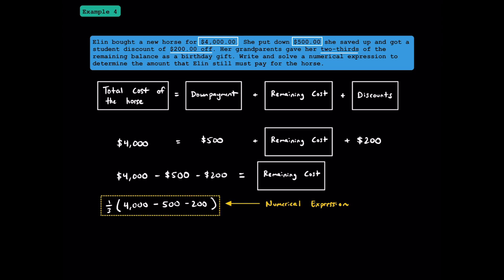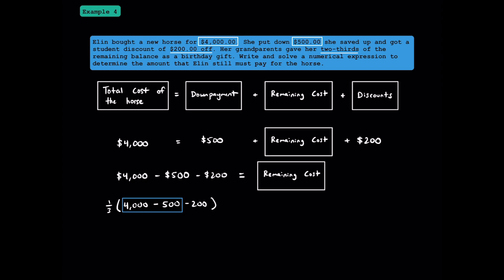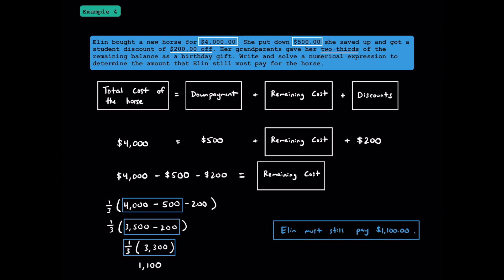This is the numerical expression to find how much Eileen still has to pay. Following order of operations, we look inside the parentheses first. $4,000 minus $500 is $3,500, then $3,500 minus $200 is $3,300. Taking one-third of $3,300 gives us $1,100. Eileen still owes $1,100. After the down payment and discount, the remaining cost was $3,300; her grandparents paid two-thirds of it, which was $2,200, leaving $1,100 for Eileen.